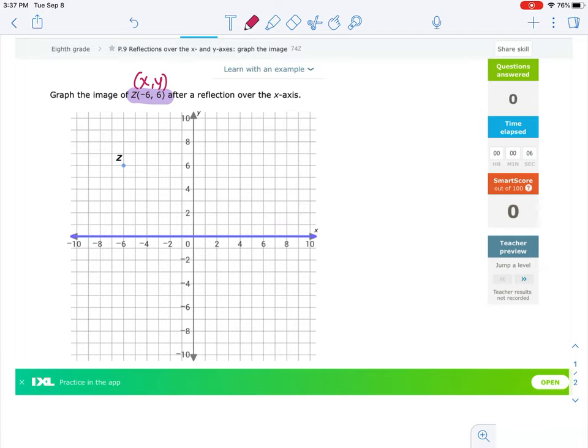So we can't actually fold this graph, so let's count. We have 6 spaces up from the x-axis. That means I need to go 6 spaces down.